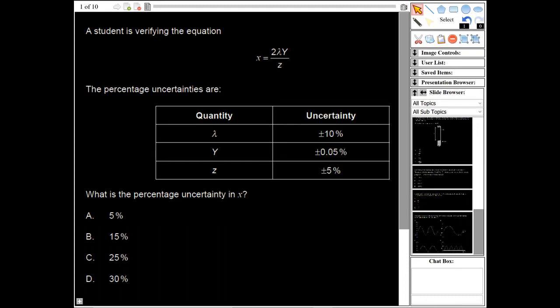It says x is equal to 2λy divided by z. The percentage uncertainties are given for different quantities, and it wants to know what the percentage uncertainty in x is. If we look at this equation here, we can see that x equals 2 times lambda times y divided by z.